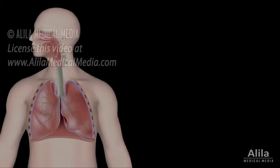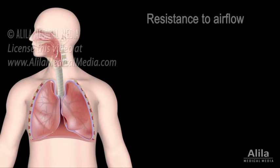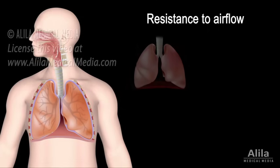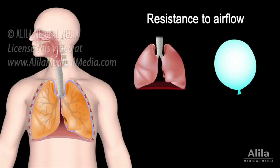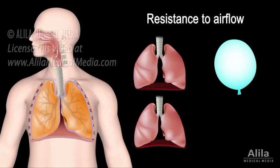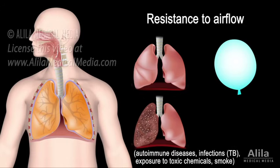Another factor that affects ventilation is the resistance to airflow, which exists within the lung tissues and in the airways. Lung compliance refers to the ease with which the lungs expand. Healthy lungs normally have high compliance and low resistance, like a thin balloon — easy to inflate. Lung compliance is reduced when the lungs become stiff, in conditions that cause scarring of tissues or fibrosis. In this case, the lung turns into a thick balloon, harder to inflate.